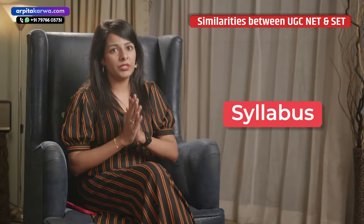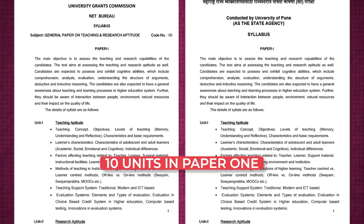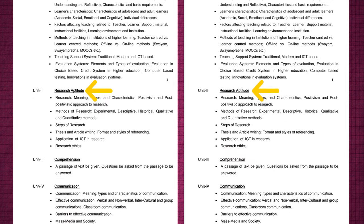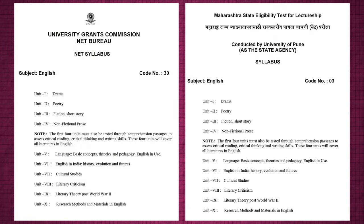The syllabus is also the same for both exams. There are 10 units in Paper 1 for both, covering teaching aptitude, research aptitude, information technology, data interpretation, and more. Syllabus for Paper 2 is also the same for both NET and SET. For example, in English literature there are 10 units including poetry, fiction, non-fiction, drama, literary theory, and criticism.